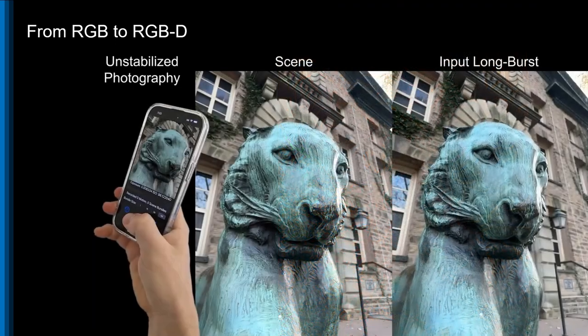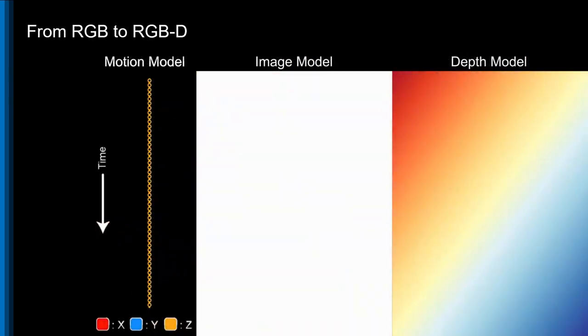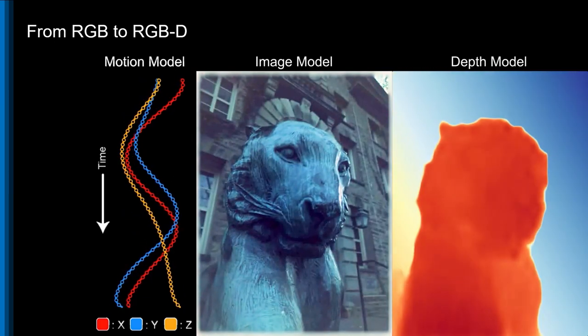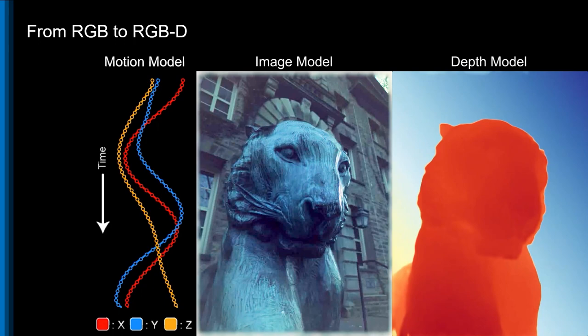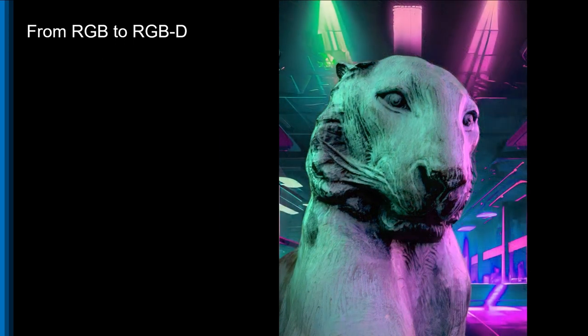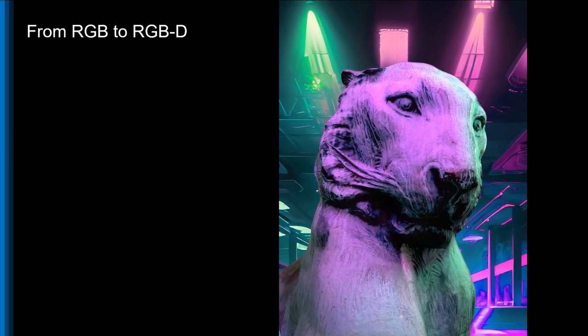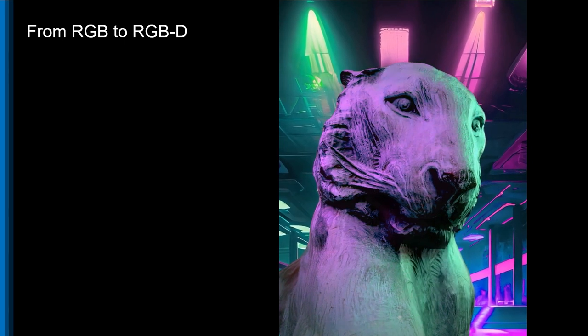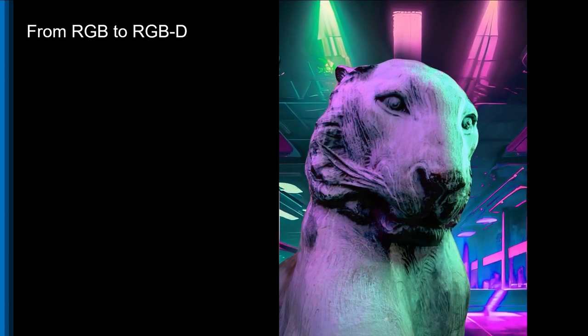We can also fit larger objects like this metal tiger statue, which we can segment in the same way as before, to see what he would look like at a techno party. Or maybe on a vacation to the pyramids.